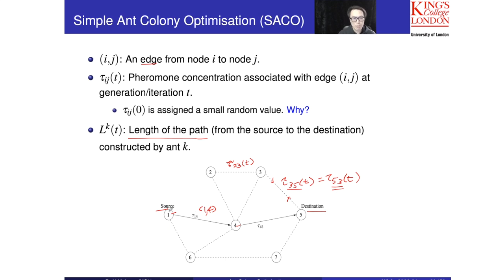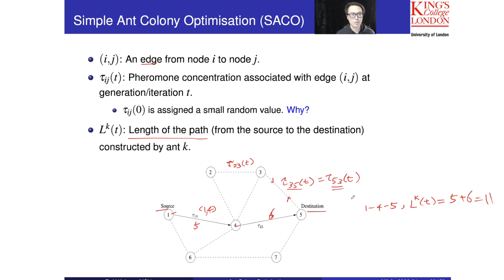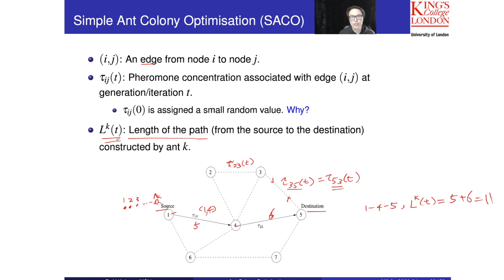So when we use path 1, 4, 5, the total cost would be 5 plus 6, that is 11. So this is the notation. To solve this problem, we will have a lot of ants: n1, n2, n3, up to nk. So we have many ants here. Each ant will construct a different path, and each ant will give you a different cost.